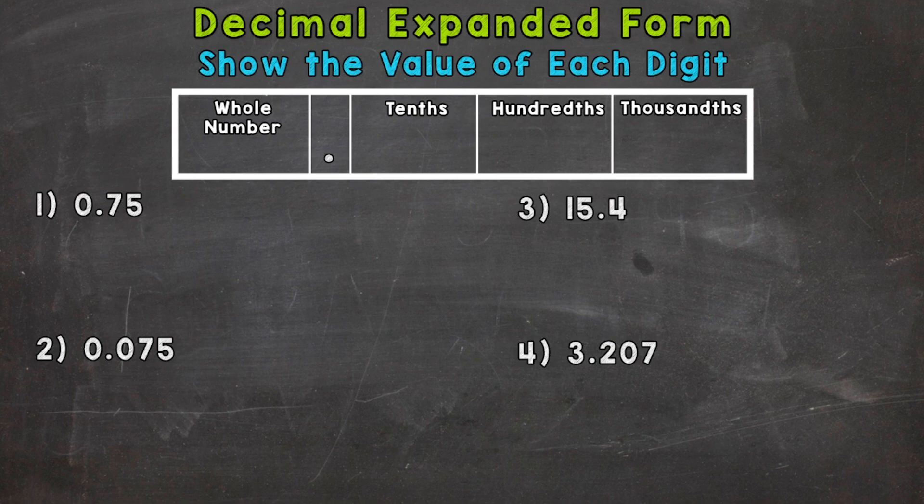That way we can really break it down and see what the value of each digit is going to be. In the case of number one, we start with a zero. So this is showing us that we don't have a whole number. So zero would go in our whole number portion of the place value chart. Then we have our decimal. Now the tenths place and we have a seven. Then we have a five, which is sitting in the hundredths place. So we can clearly see that we have seven tenths and five hundredths.